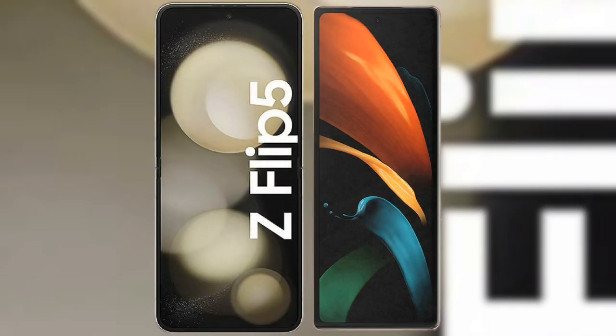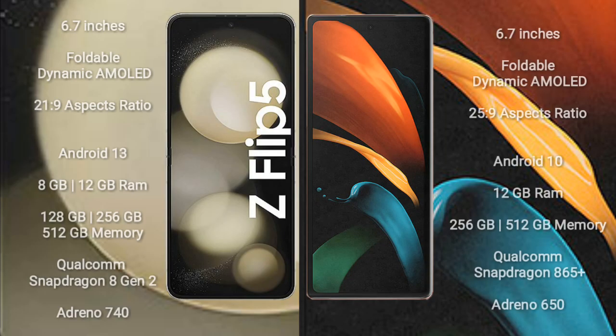I will compare the new Samsung Galaxy Z Flip 5 with Samsung Galaxy Z Fold 2. The Samsung Galaxy Z Flip 5 comes with a 6.7-inch foldable dynamic AMOLED display with an aspect ratio of 21:9. The Samsung Galaxy Z Fold 2 also comes with a 6.7-inch foldable dynamic AMOLED display, but with an aspect ratio of 25:9.